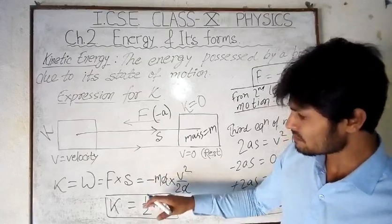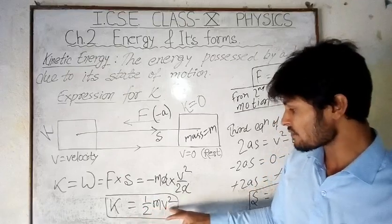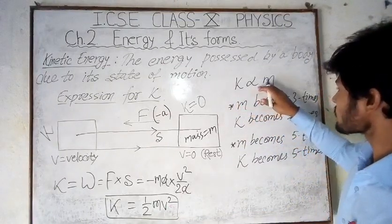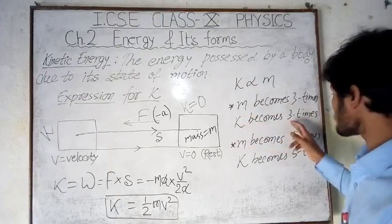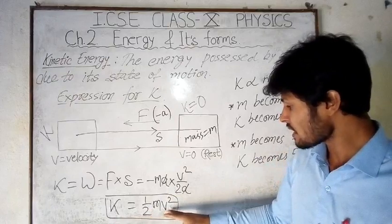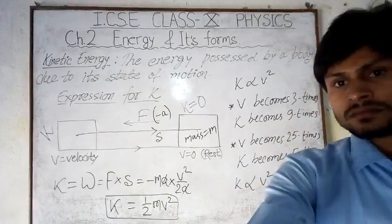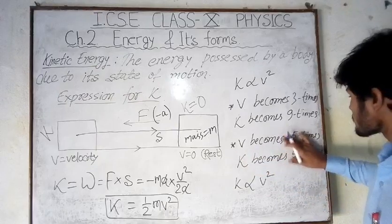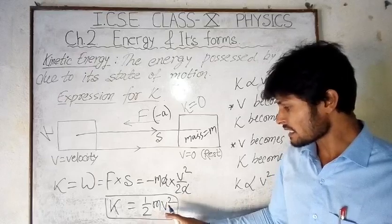After putting the values, we get K = ½mv². We don't take the minus sign because kinetic energy is a scalar quantity and we take the magnitude. So the final expression for kinetic energy is K = ½mv². From this expression, K is directly proportional to m — if m becomes three times, K becomes three times; if m becomes five times, K becomes five times. K is also directly proportional to v² — if v becomes three times, K becomes nine times; if v becomes five times, K becomes twenty-five times.